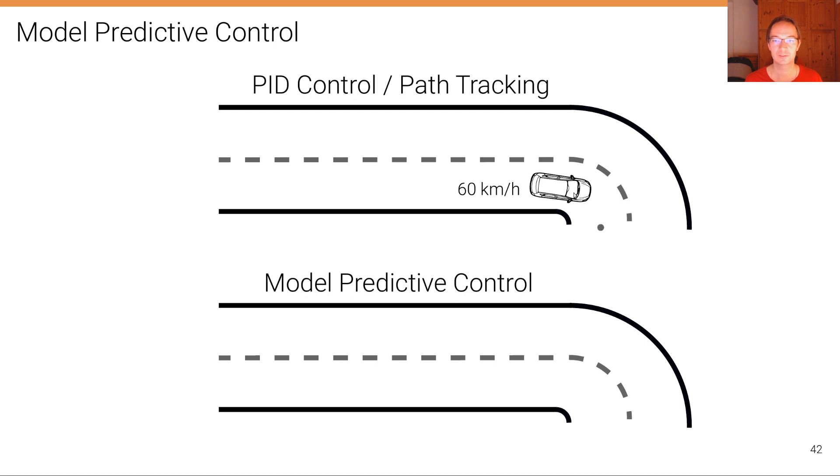Once we have accelerated to 70 kilometers per hour, we see that now, very suddenly, very abruptly, this target point on the path moves to the right. But we are too fast—we can't brake as quickly anymore.